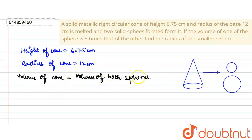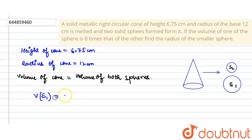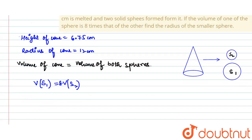It is also given that the volume of one sphere is eight times that of the other. So let S1 be the bigger sphere and S2 be the smaller sphere. Then V(S1) = 8 × V(S2). We will first find the volume of the cone and then use this relationship to find the radius of the smaller sphere S2.